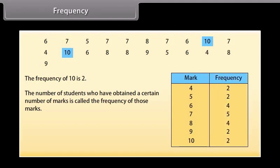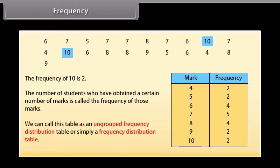We can write this data in a table form to make it more understandable. These are the marks and these are the frequencies. We can call this table as an ungrouped frequency distribution table or simply a distribution table.